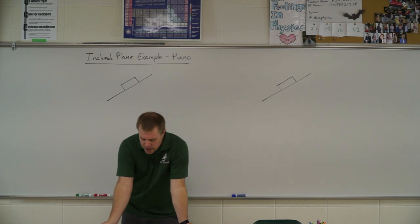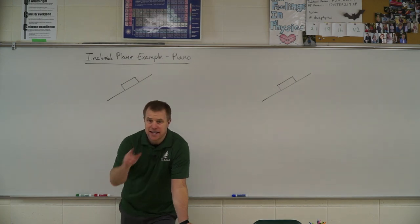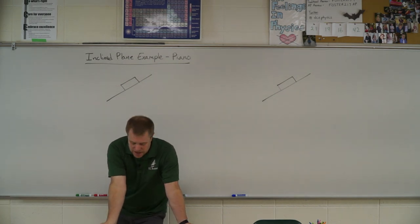So let's go ahead and read it. So a man pushes a piano of mass 180 kilograms so that it slides at a constant velocity. Constant velocity, that's our clue that the acceleration is zero.